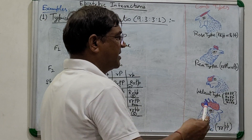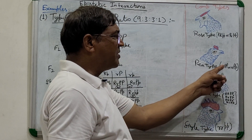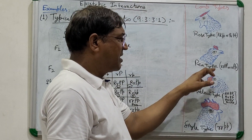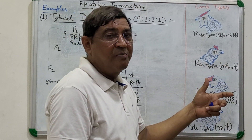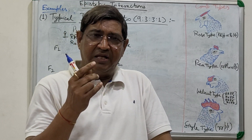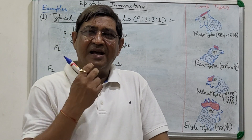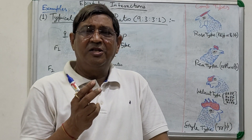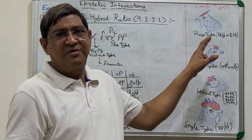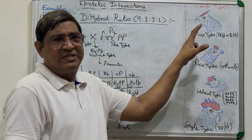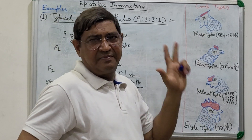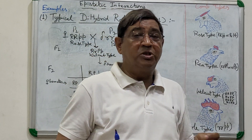In another case, small r small r with capital P capital P, or small r small r with capital P small p — that poultry will be of P-type comb. So when a trait is controlled by two genes and the dominant gene of one comes with recessive of the other, the dominant phenotype is expressed — whether it is rose or P-type.